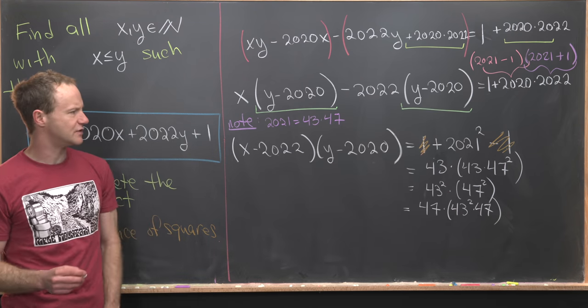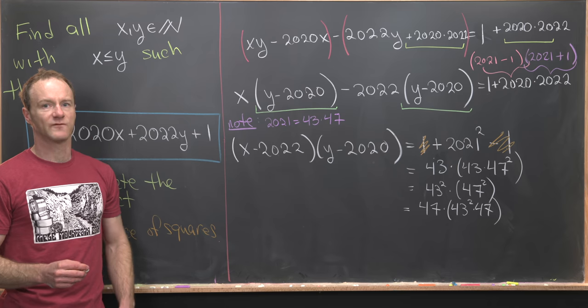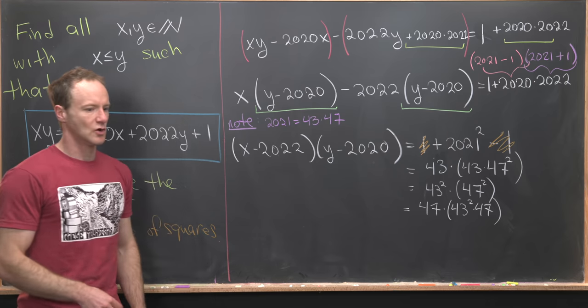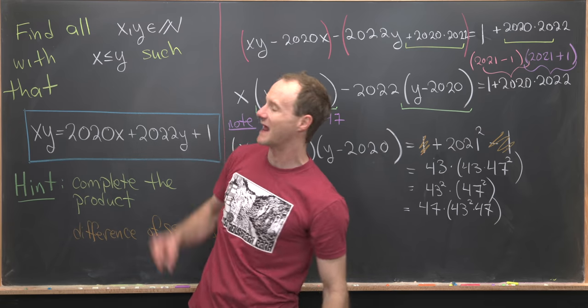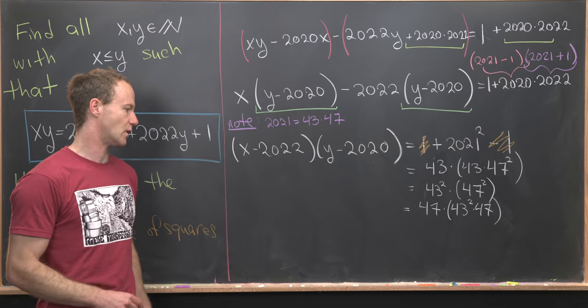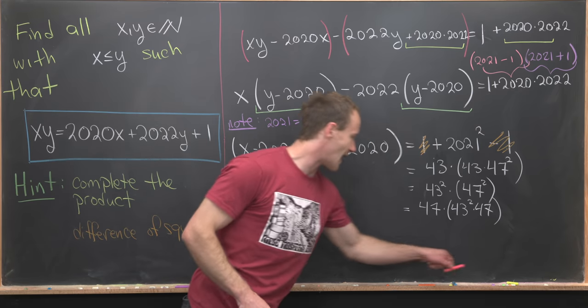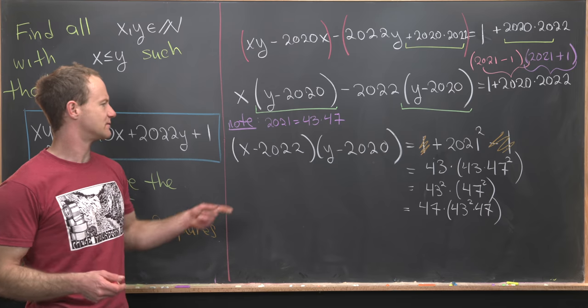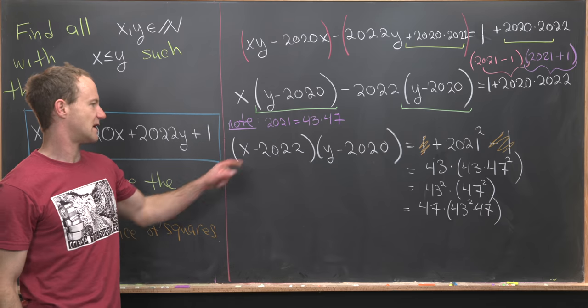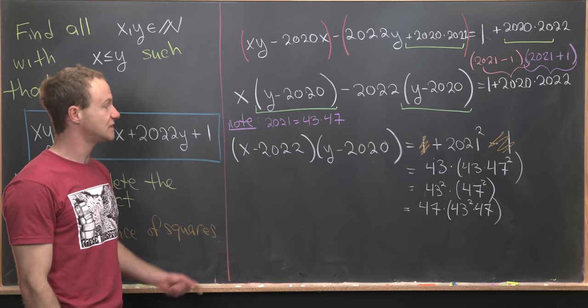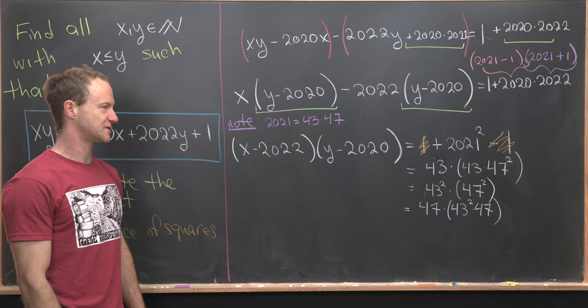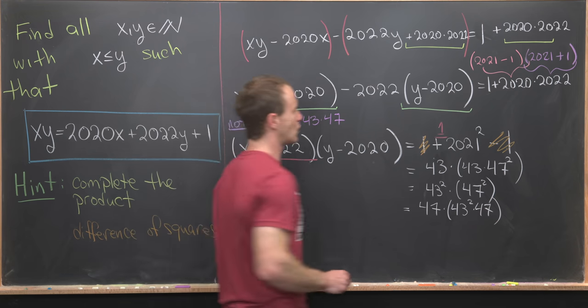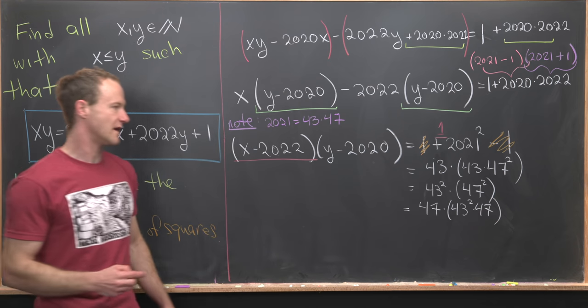And obviously, there are more permutations for factoring this out. But these are all of the ones which will work well with our condition that x needs to be ≤ y. And what I mean by that is I am making this factorization in some sort of order so that the first bit corresponds to our x - 2022 and our second bit corresponds with our y - 2020. So let's just underline that. So this red bit corresponds to factoring a 1 right there...